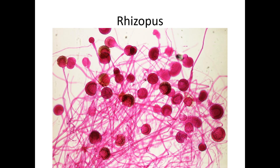Rhizopus — notice it's very thready, which means fungus, so this is another organism in the kingdom Fungi with eukaryotic cells. Instead of skeletal fingers like Penicillium, this one has a ball with a nice little afro coming off the top. This is common black bread mold — so Rhizopus is just another example of a fungus: eukaryotic, not plant or animal.